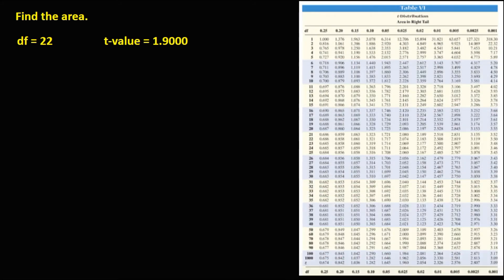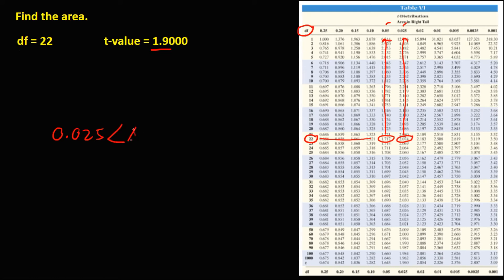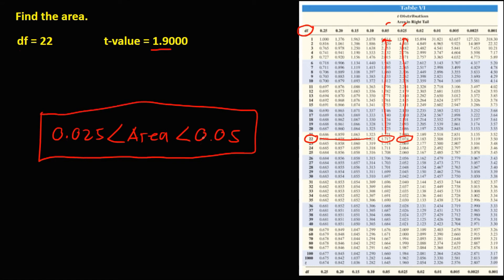For the next given, we have degrees of freedom that's 22 and the T value that's 1.9. So look for 1.9 under degrees of freedom 22. Since 1.9 is between 1.7 and 2.0, therefore the area is between 0.025 and 0.05.